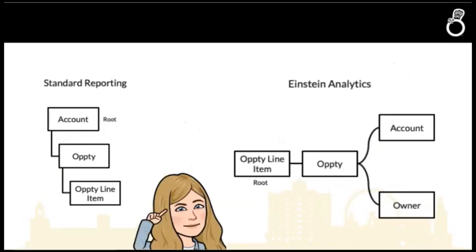In Einstein Analytics we switch things a little bit around. With standard reports we have account at the top level and go downwards in the hierarchy through opportunity and opportunity line item. In Einstein Analytics we switch it around and take the most detailed level — the lowest grain, which in this case is our opportunity line item — as our root, and we move upwards in the hierarchy. We're also not restricted to three levels, so if you have five levels you can do that in Einstein Analytics as long as it makes sense.